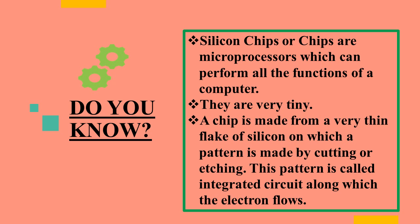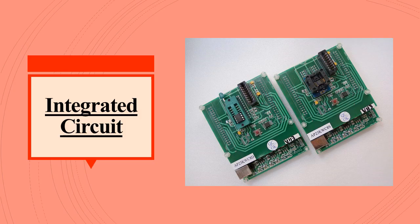Silicon chips are very tiny in size. A chip is made from a very thin flake of silicon on which a pattern is made by cutting or etching — etching refers to very small lines scratched onto a surface. This pattern is called an integrated circuit, and electrons flow through this integrated circuit. You can see the integrated circuit in the picture, showing the pattern through which electrons flow.